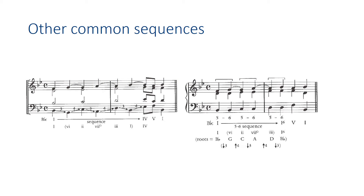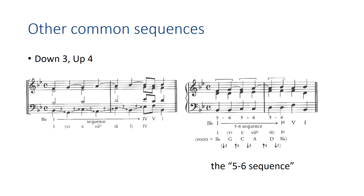Some other types of sequences are the down three, up four pattern. The roots go down a third, up a fourth, down a third, up a fourth — and so on — and then a cadence. And if you invert every other chord, we go from B-flat to G but inverted. Then you get a stepwise bass and a melody that goes from a fifth above the bass to a sixth above the bass. This version is fairly common and is known as the 5-6 sequence.